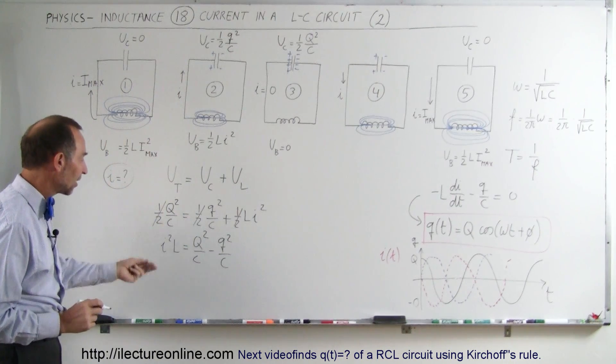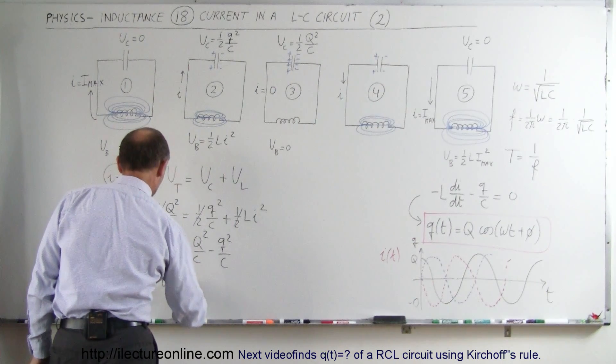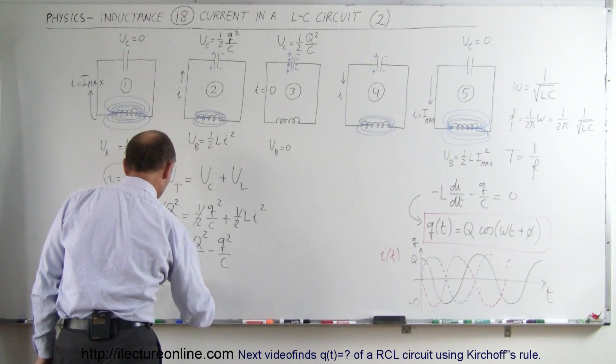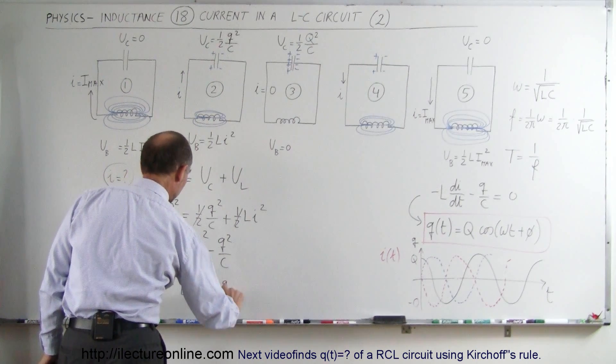The next thing we can do is divide both sides by L and factor out a capacitance. So this becomes I squared is equal to 1 over L times C times the quantity Q squared minus Q squared.